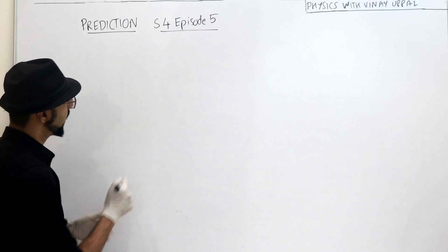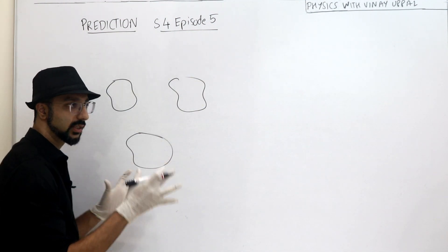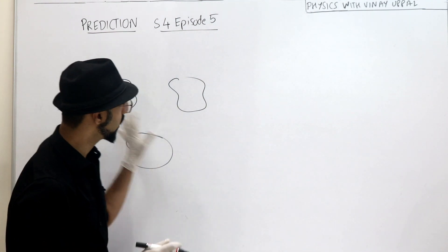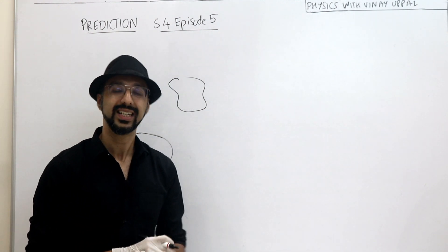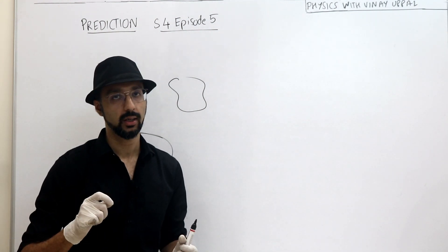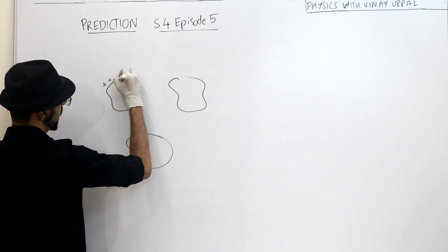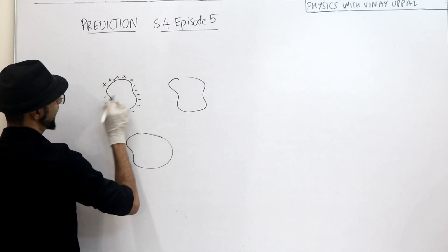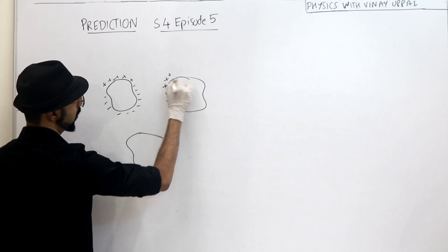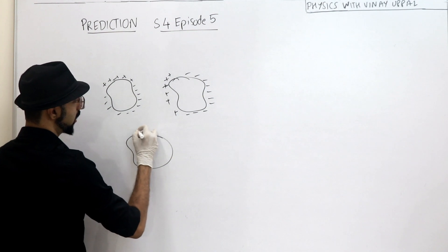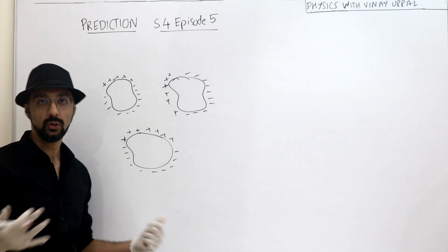The question asks: suppose I have three conductors of any shape, isolated — there is nothing else. Total charge of the system is positive. Is there a possibility that every conductor will have both positive as well as negative surface charge density? Is it possible that some conductor here has both positive and negative surface charge density? Yes or no?